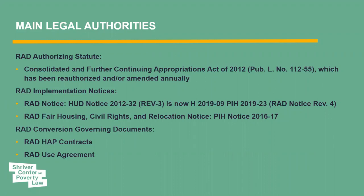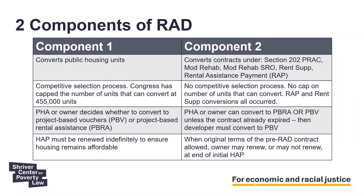The main legal authorities for RAD include the RAD authorizing statute, which has been reauthorized annually with slight amendments. There are also RAD implementation notices — four different RAD notices outlining the process for conversions — and a RAD notice on fair housing, civil rights, and relocation covering obligations under the Fair Housing Act, other civil rights laws, and the Uniform Relocation Act. Additionally, many documents govern each individual conversion, including HAP contracts, use agreements, and other relevant agreements.